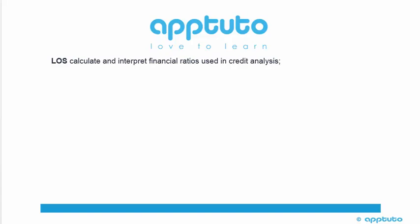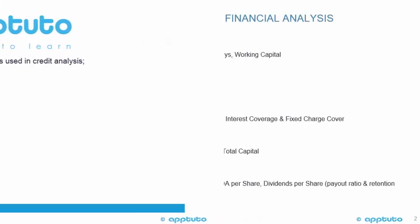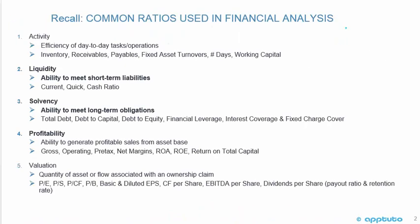This LOS is Calculate and Interpret Financial Ratios Used in Credit Analysis. We'll recall from accounting some of the common ratios used in financial analysis. The main categories are Activity Ratios, Liquidity Ratios, Solvency Ratios, Profitability Ratios, and Valuation Ratios. In this reading, we're talking about which ratios would be used in credit analysis.